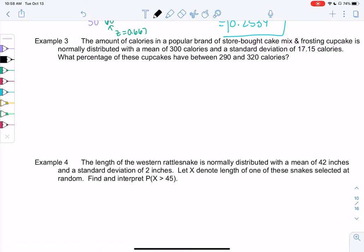We're in section 6-3 and this is example three. The amount of calories in a popular store-bought cake mix and frosting cupcake is normally distributed with a mean of 300. So as soon as I see normally distributed I'm going to go ahead and draw the normal curve. With a mean of 300 that tells me that 300 is in the middle and a standard deviation of 17.15.